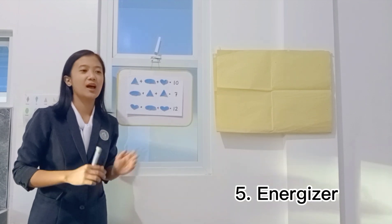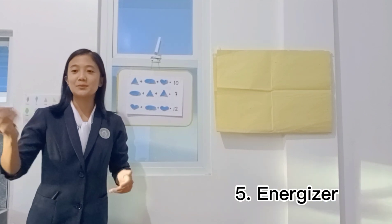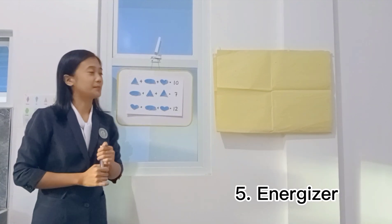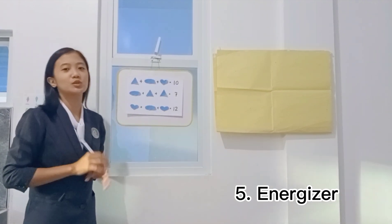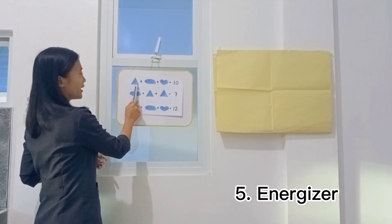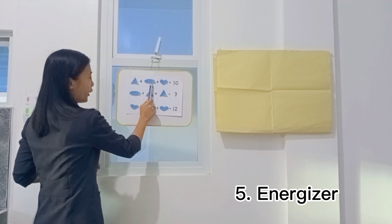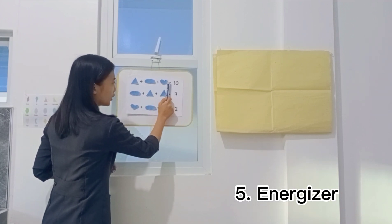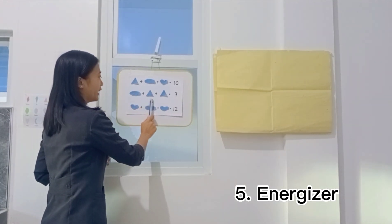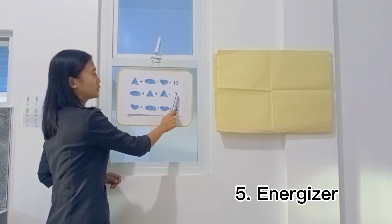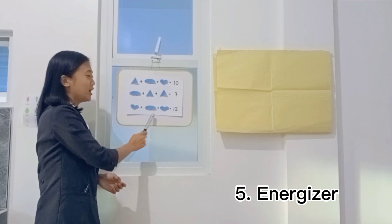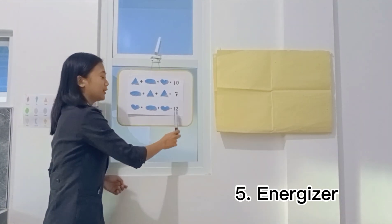What do you think is in this puzzle? Yes, Princess? It has a sequence. So let's try to solve the shape puzzle. A triangle plus oval plus heart is equal to 10. And oval plus triangle plus triangle is equal to 7. Heart plus oval plus heart is equal to 10.